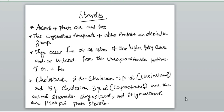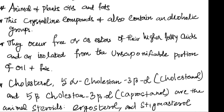Next are sterols. Sterols occur in animal and plant oils and fats. They are crystalline compounds containing alcoholic groups. They occur in free form or as esters of higher fatty acids, and are isolated from the unsaponifiable portions of oils and fats. Cholesterol is 5-alpha-cholestan-3-beta-ol, and coprostanol is 5-beta-cholestan-3-beta-ol; these are animal steroids.